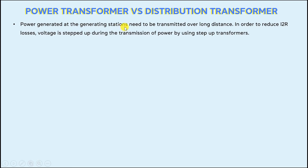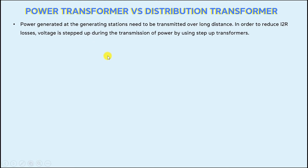Power generated at the generating stations needs to be transmitted over a long distance. In order to reduce I²R losses, voltage is stepped up during the transmission of power by using a step-up transformer. The transformers used in stepping up or stepping down the voltage in the transmission network are known as power transformers.